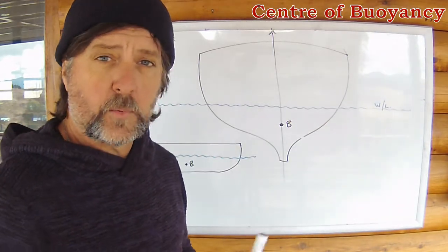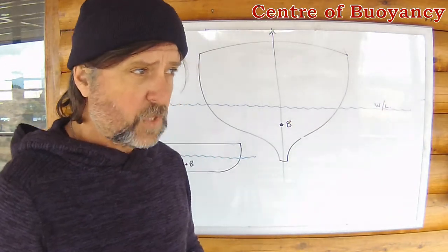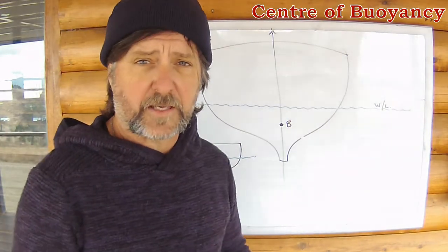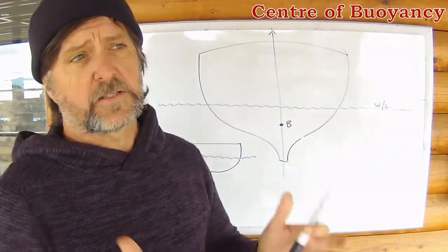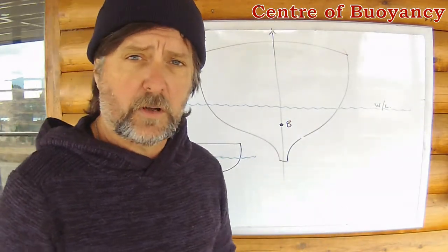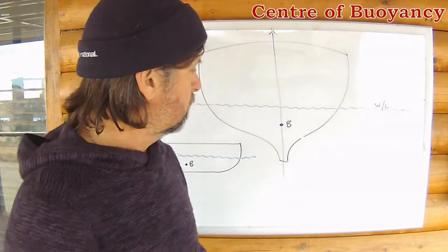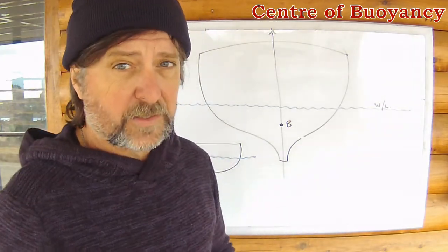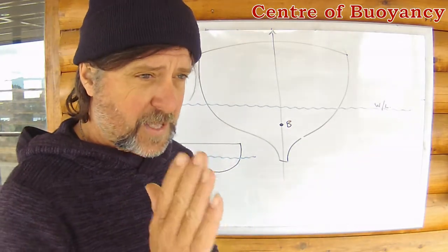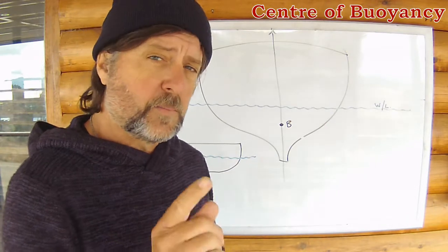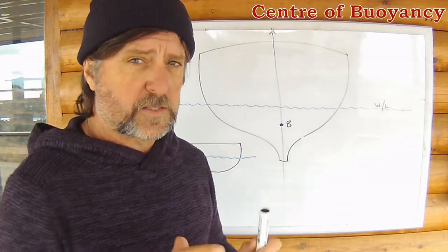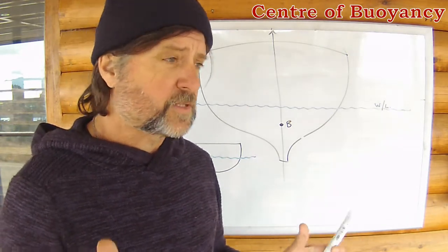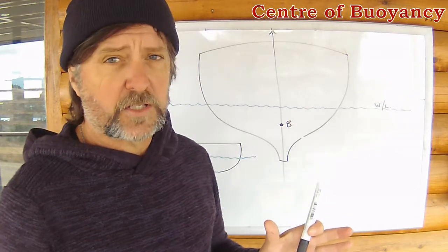Now this is all very well when you're sitting still in the pen, when the vessel is quite static, but let's take her out to sea and start pitching and rolling. Then it can be seen that B is going to get pretty busy. It has to, at any instant in time, be located in the centre of that volume, and of course that volume is constantly changing.